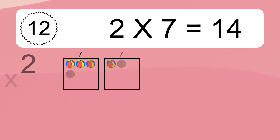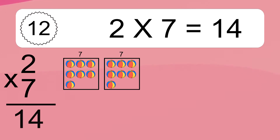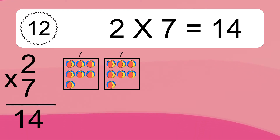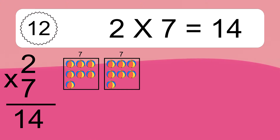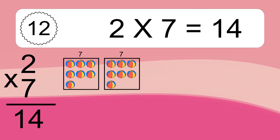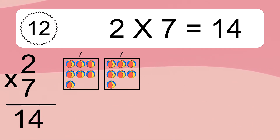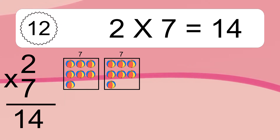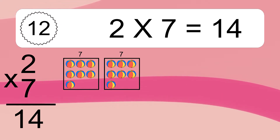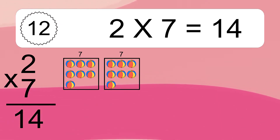2 times 7 equals what? 2 times 7 equals 14. We have 2 boxes, and each box has 7 colorful balls inside. If you count all the balls in all the boxes together, you will have 2 times 7 balls. This equals 14 balls.